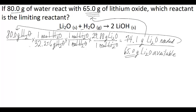I'm going to do one more calculation, because you could have randomly picked lithium oxide to start. You could have done a calculation with the 65.0 gram number and come to the same conclusion. You could have asked: how many grams of water do I need to react with all of the given lithium oxide? In this case, you'd start with your 65.0 grams of lithium oxide.